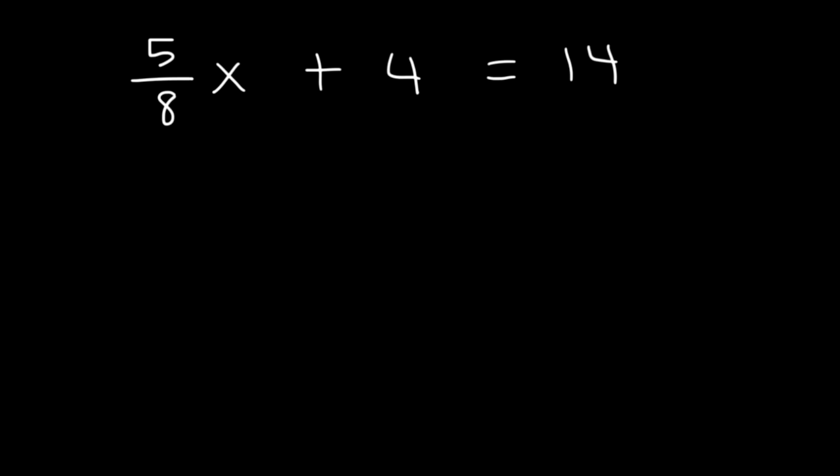Now before we multiply by 8, let's get rid of the 4. Let's subtract both sides by 4. You can multiply by 8, but 8 times 14 is going to be a large number, so let's avoid doing that for now. These will cancel. And so 5 over 8x is equal to 10.